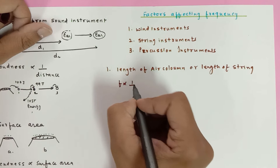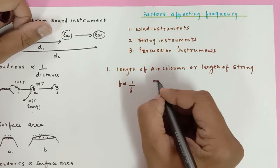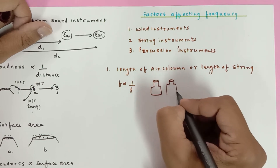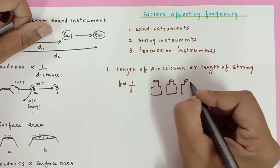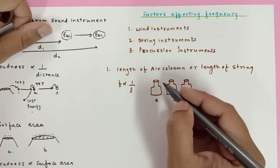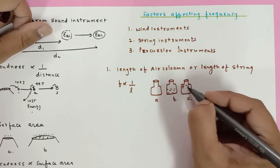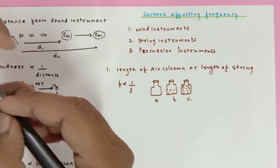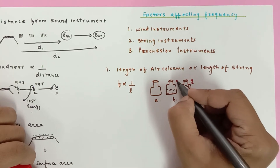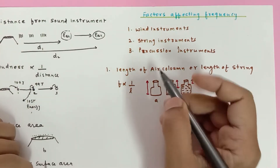Frequency is inversely proportional to the length. For example, take three identical bottles A, B, and C. Bottle A is completely empty, bottle B is half filled with water, and bottle C is filled almost to the top. The length of the air column is smallest in C and largest in A.